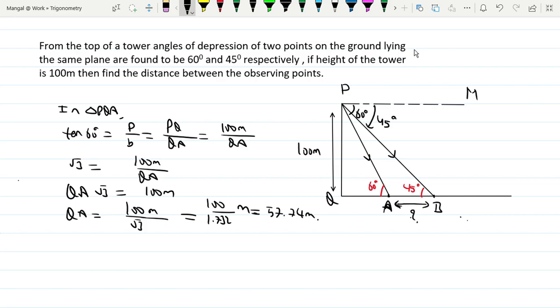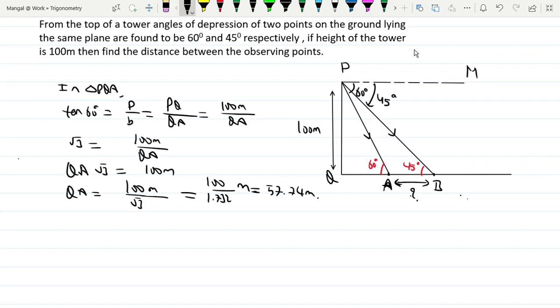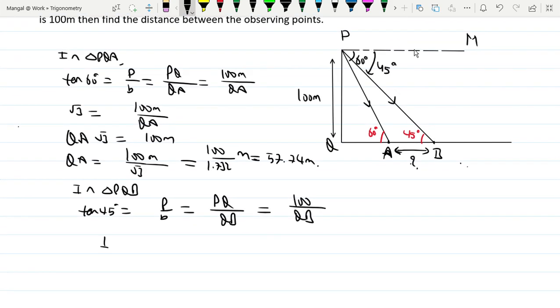Now calculate QB. In triangle PQB, PQ perpendicular, QB is base. So tan 45 degrees equals perpendicular divided by base, perpendicular PQ, base QB. So tan 45 equals 1, so QB equals 100 meters.